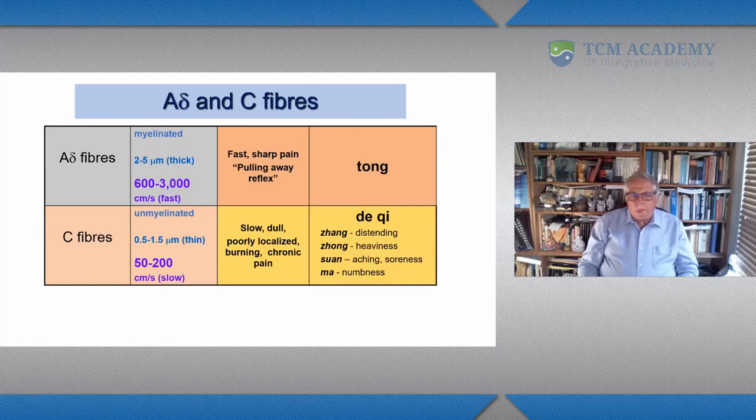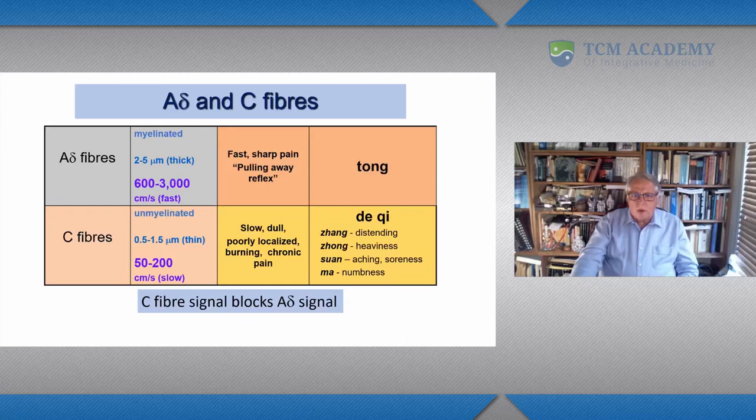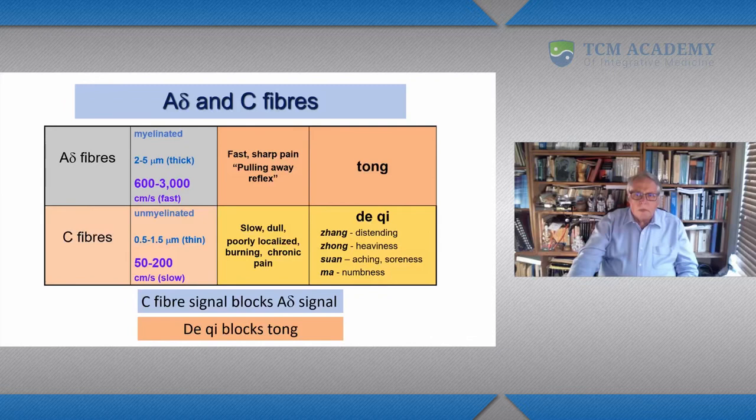Essentially they're all C fiber sensations. So we could say that it's a C fiber signal blocking the A-delta, or if you want to put it another way, de qi blocking tong.